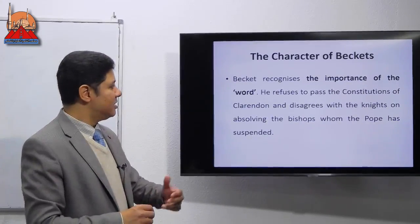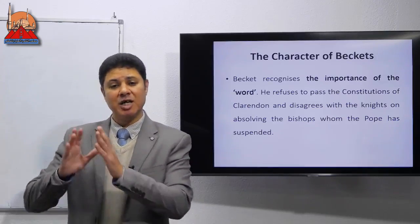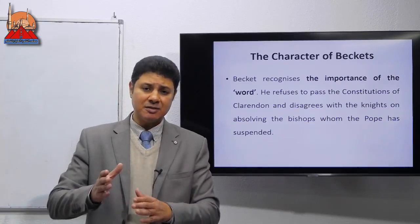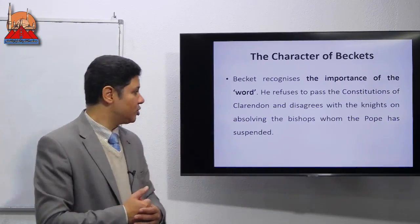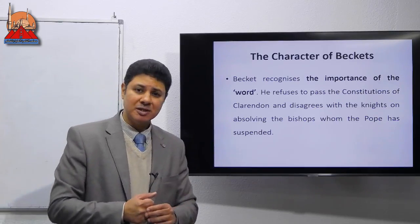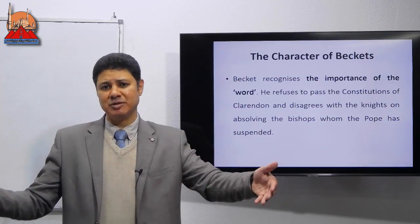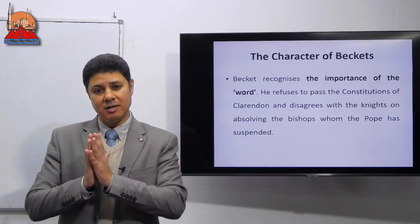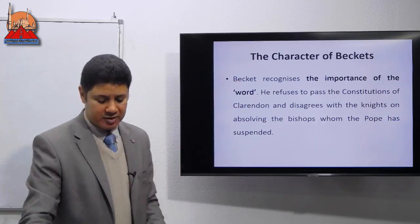One of the main important qualities associated with Becket is his recognition of the importance of the word. From the early beginning, he was the king's friend and chancellor. But when the king tried to control the church, Becket rejected the king's ambition, and that's why he didn't give the king his word to pass the constitutions. He disagreed with the knights on absolving the bishops whom the pope had suspended. When the conflict arose between the archbishop and the king, the king had an agreement with other bishops to pass the Clarendon Constitutions, but Becket didn't fight — he coordinated with the pope and the bishops were suspended.